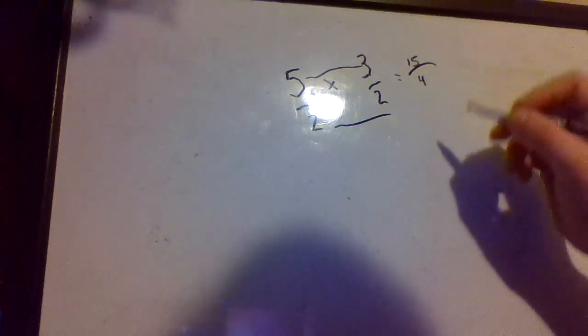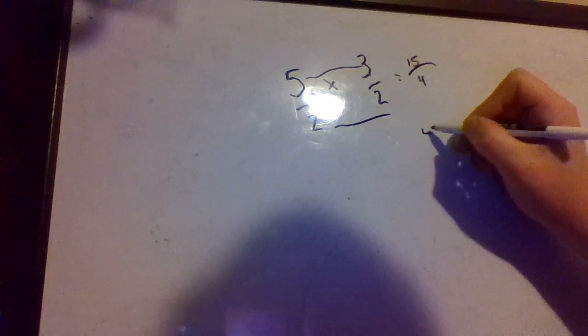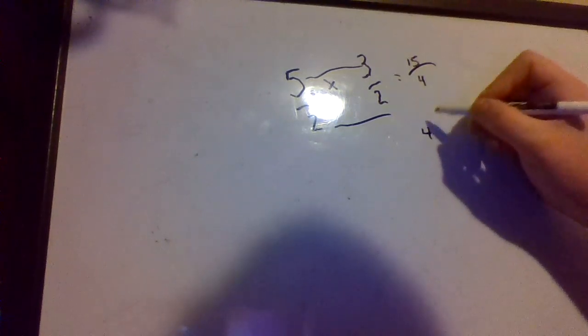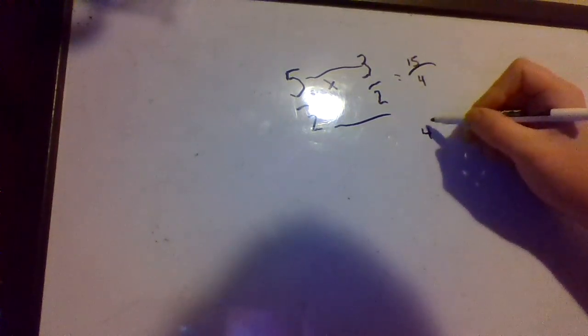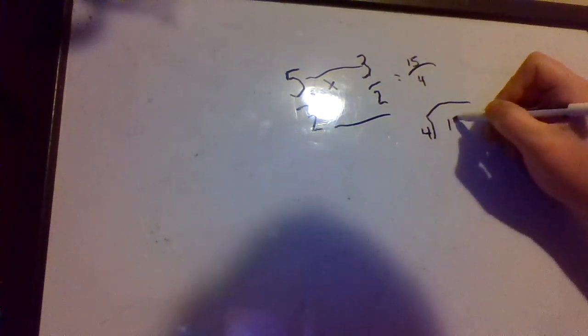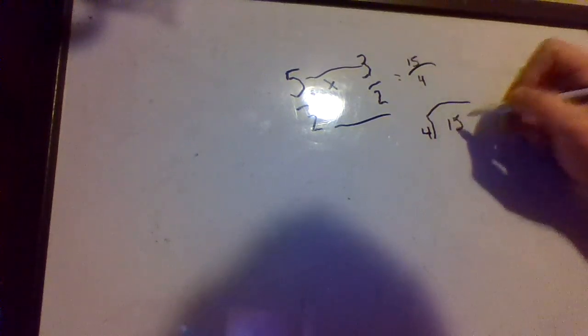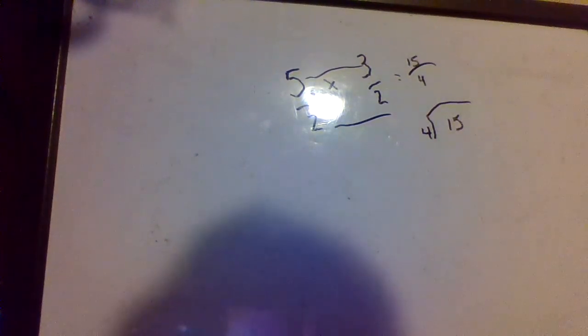But when we're dealing with mixed numbers like we obviously were, we're going to make that improper fraction back into a mixed number. And the way we're going to do that, we're going to put the denominator on the outside and 15, the numerator, on the inside of the division house.